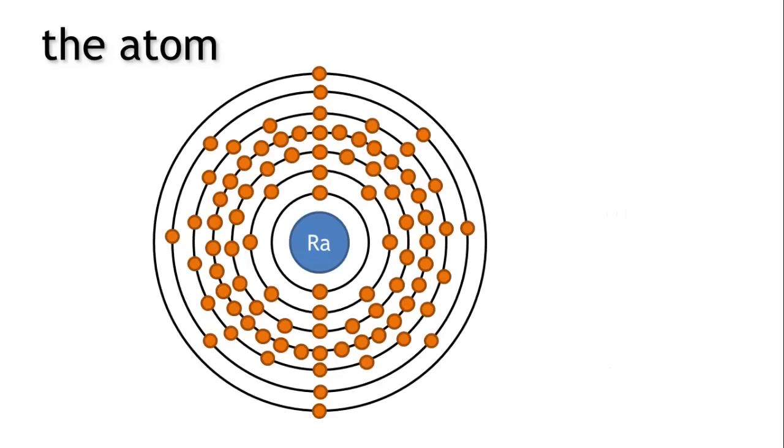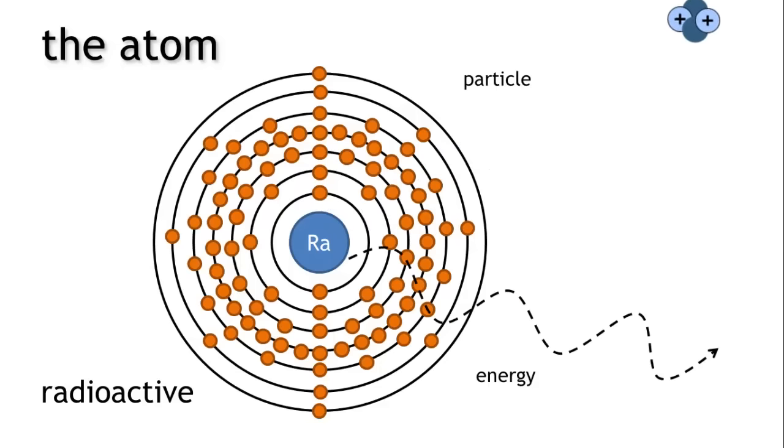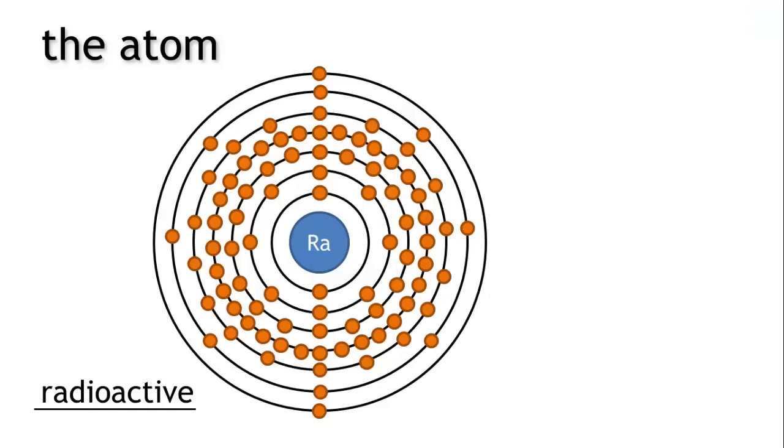If the atom gives off radiation we call it radioactive, and it can either give off radiation in the form of energy or in the form of a particle. This type of atom we call radioactive, and the actual atoms are called radioisotopes.